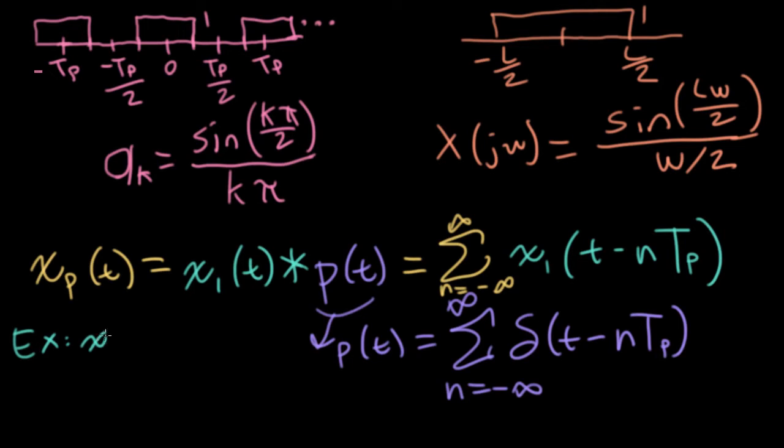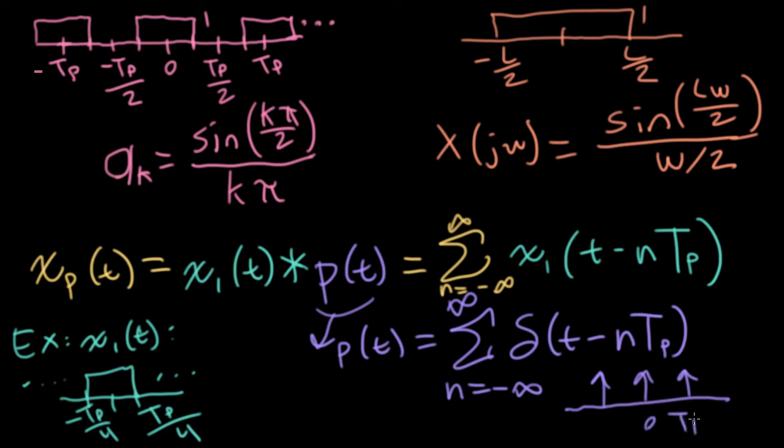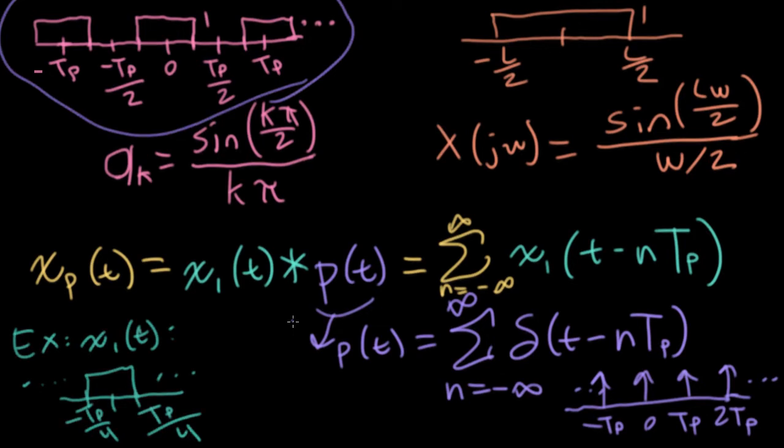For example, if x1 of t looks like a boxcar going from minus tp over 4 to t sub p over 4, and I were to take it and convolve it with this purple impulse train, that would wind up giving me this square wave. Now that's just one particular example. What I would like to do is get a feeling for what this operation looks like in the frequency domain.